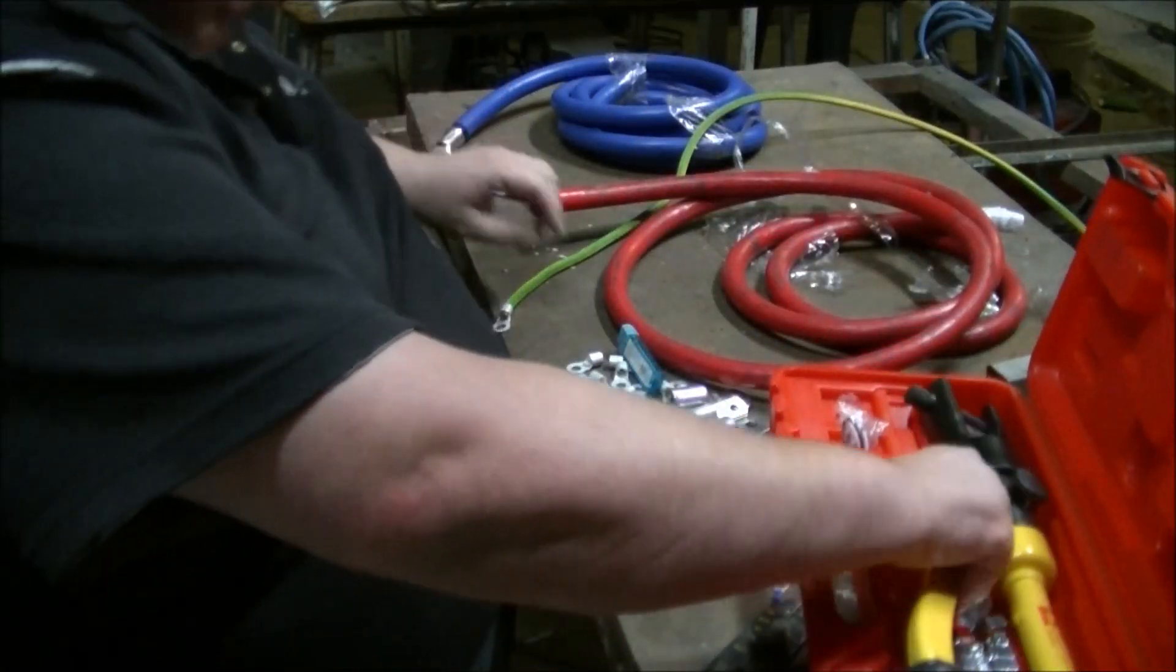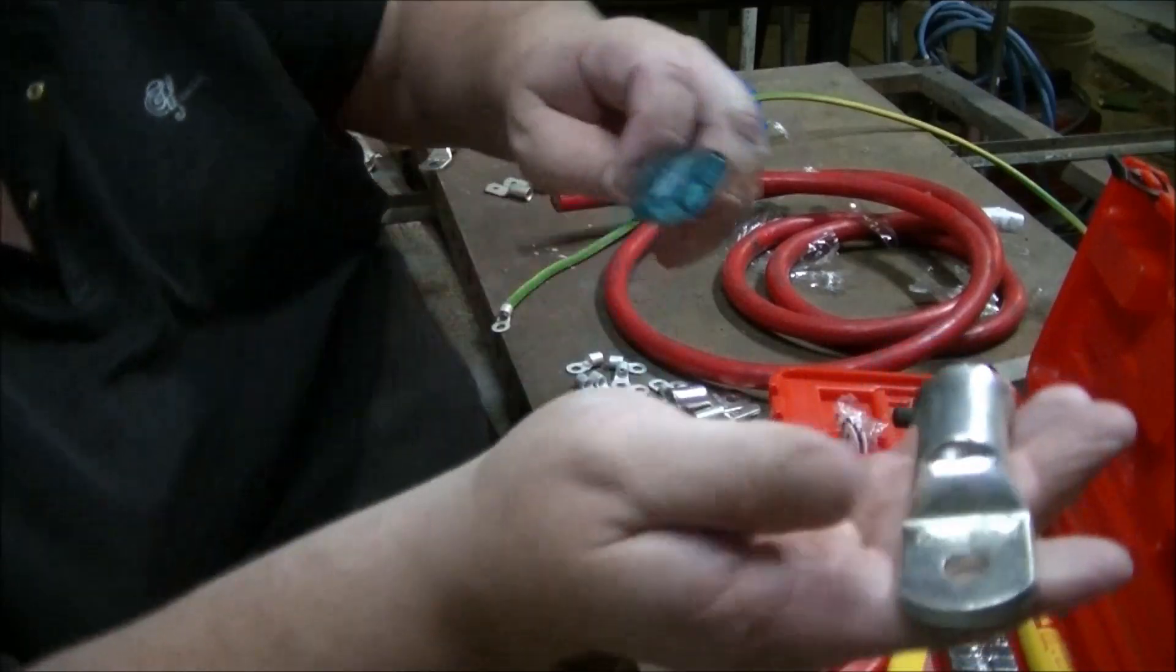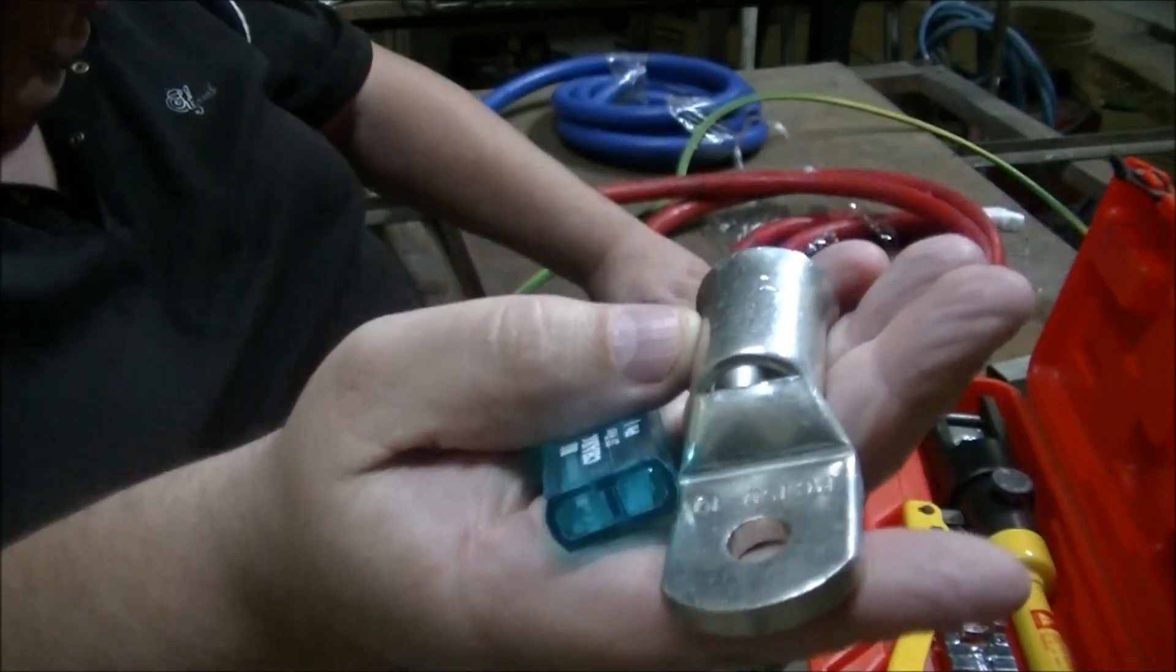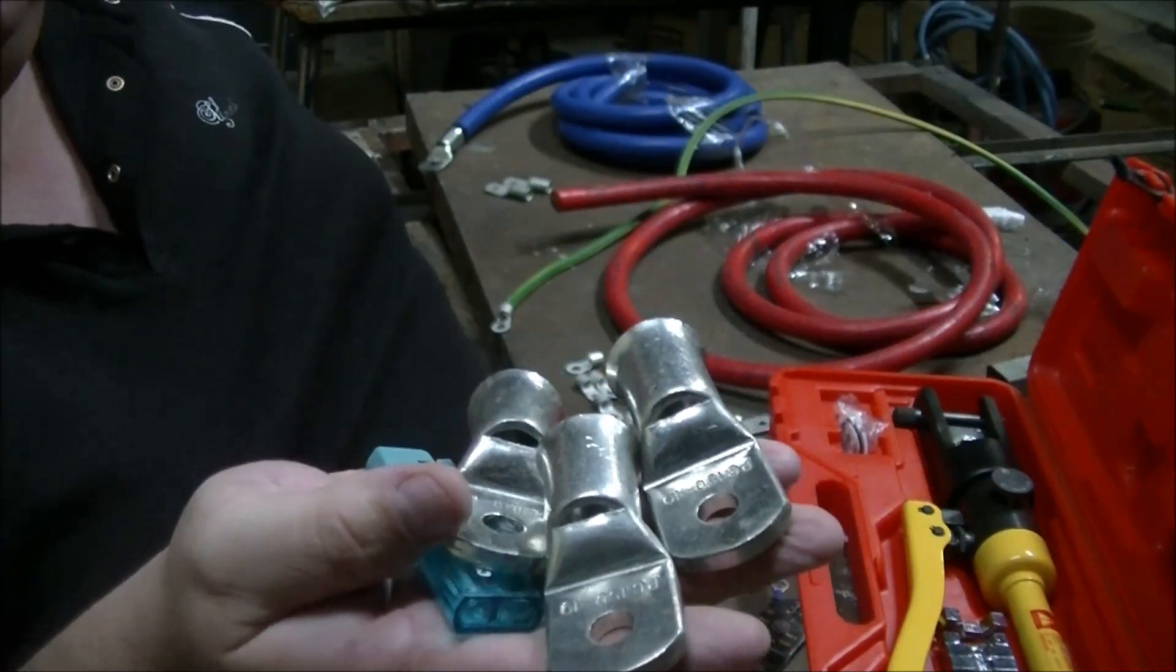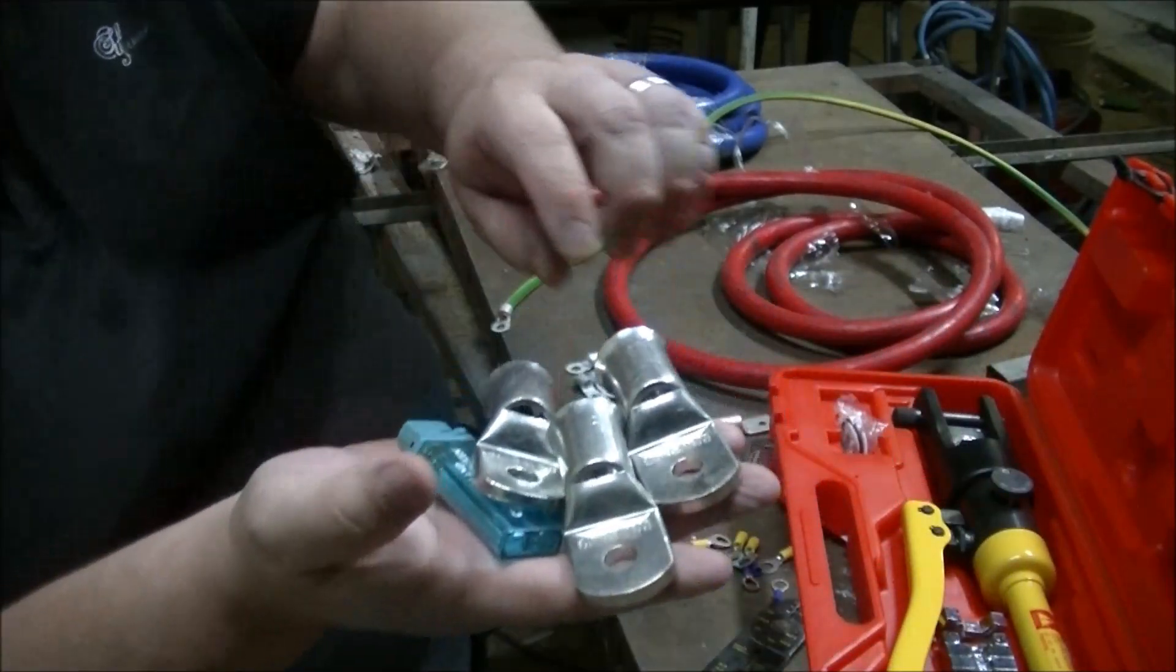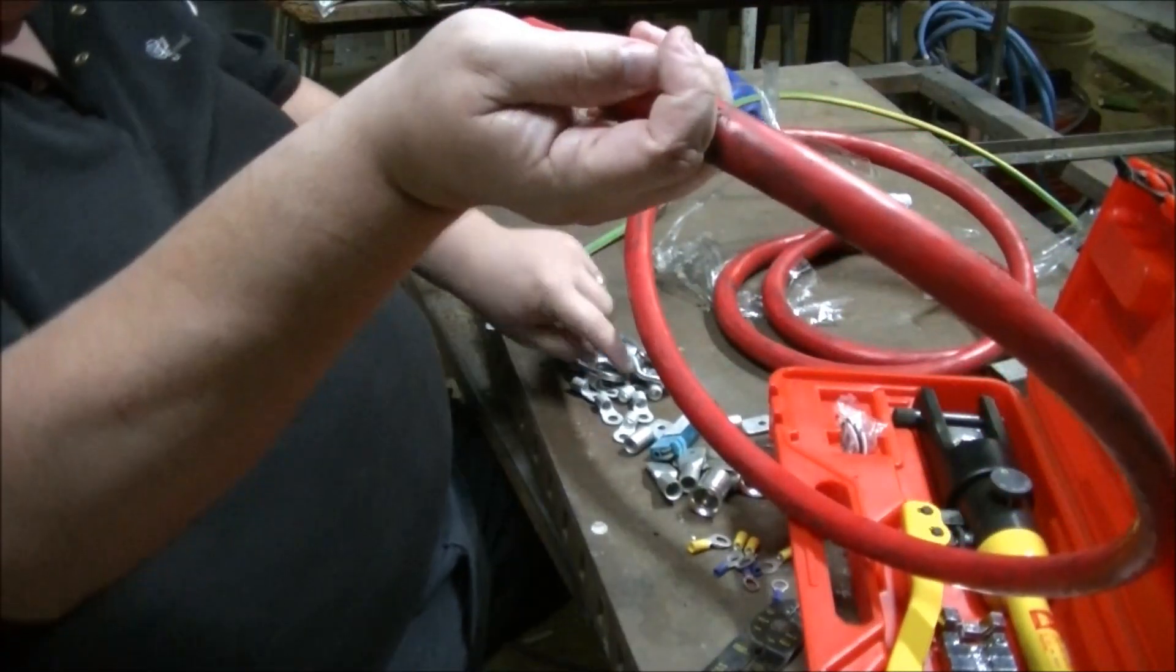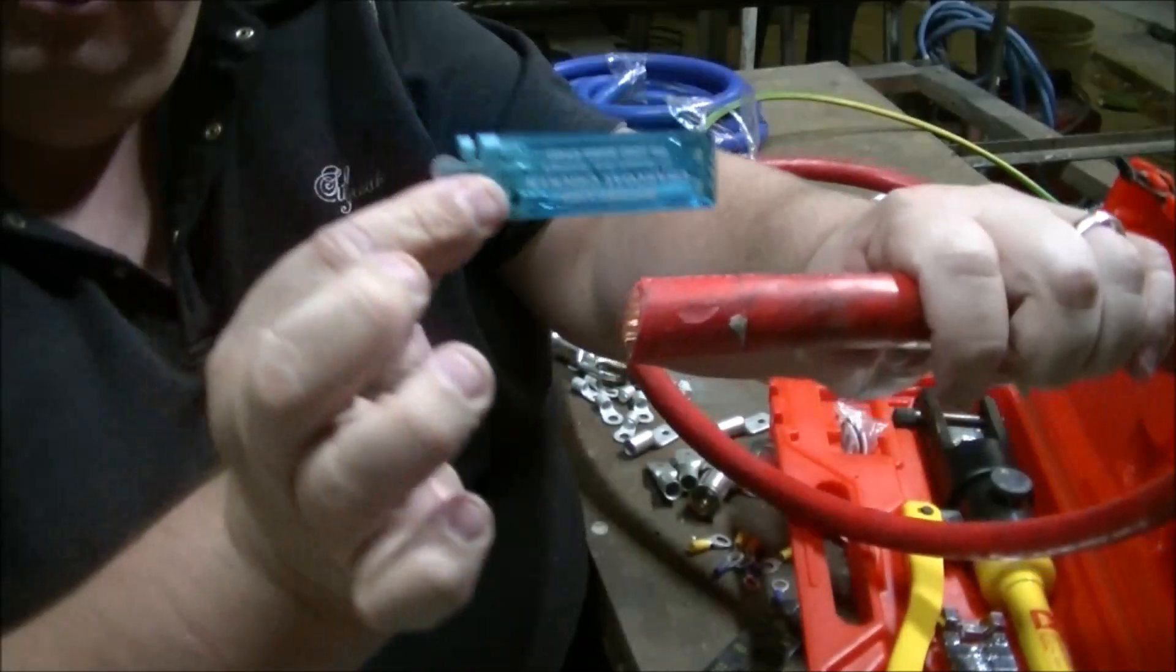When you start getting a bit bigger, like into cables that'll handle two to three hundred amps, you end up getting crimps that are that big. These ones I've got are 150 millimeter crimp. I've got a few here and a few extra ones there, just in case. They're a bit bigger, so they fit some cable. I've got some 150 millimeter cable I picked up off the internet.